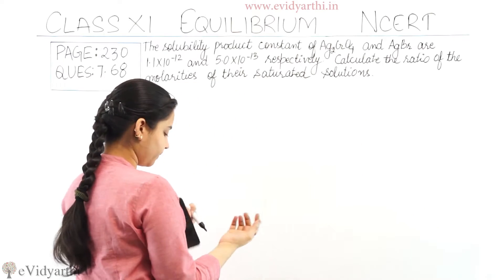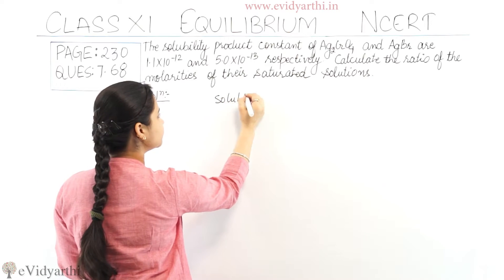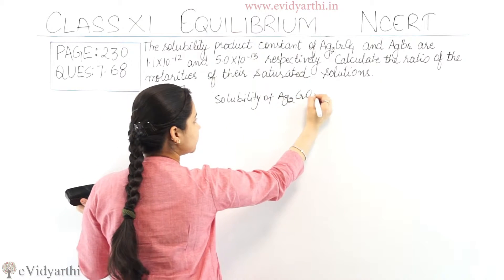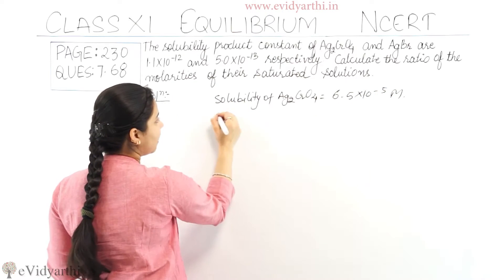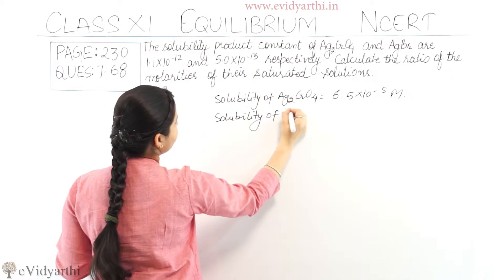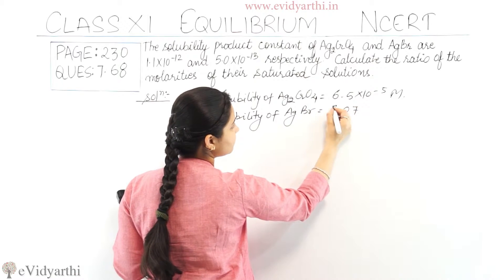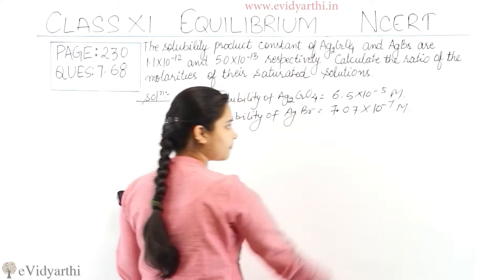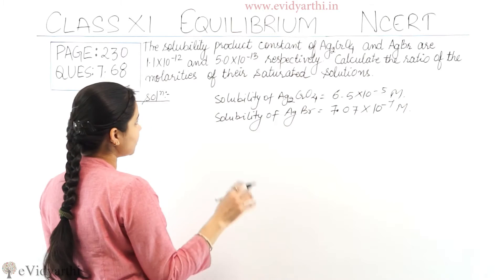Now we have the solubility of Ag₂CrO₄, which was 6.5×10⁻⁵ molar, and we have the solubility of AgBr, which was 7.07×10⁻⁷ molar. We were asked to find the ratio of molarities of their saturated solutions.